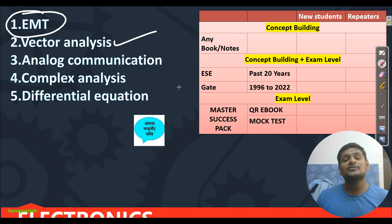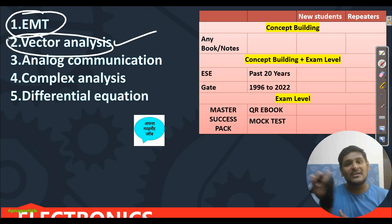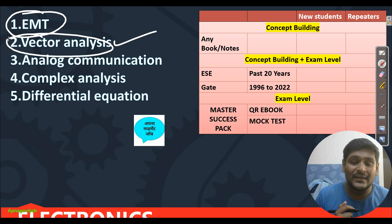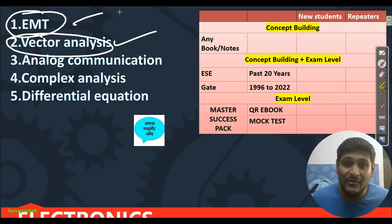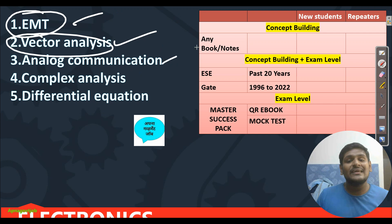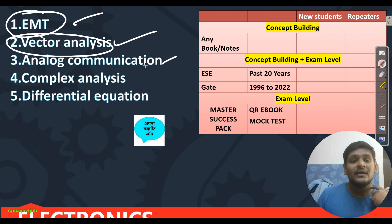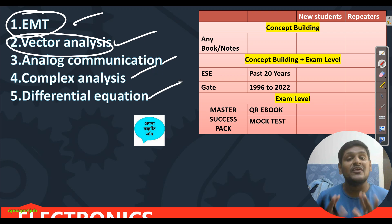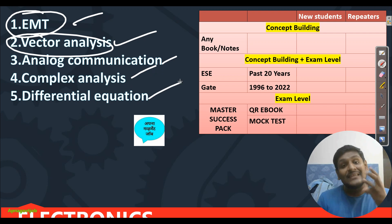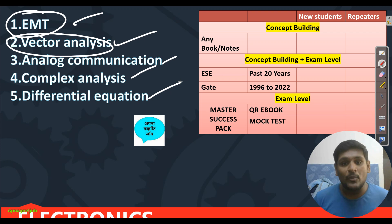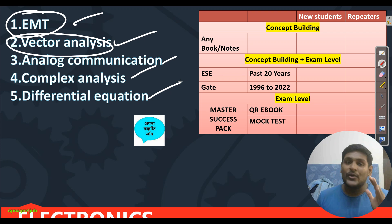Second is Vector Analysis — before going to EMT, start with Vector Analysis first, which is part of your Engineering Mathematics, and then start EMT so you get comfortable with it. Third subject is Analog Communication — only Analog Communication in phase 3. Then Complex Analysis and Differential Equation. So in phase 3 for Electronics, we are taking three chapters of Engineering Mathematics and two from the technical part.